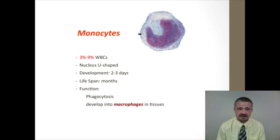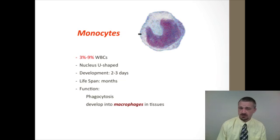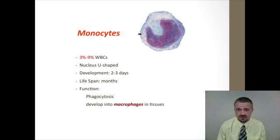The last white blood cell is the monocyte — generally the largest and third most common, making up about 5 to 10% of white blood cells. It has a U-shaped nucleus. Similar to neutrophils, it is a macrophage and will phagocytize different things, but unlike the picky neutrophil which only targets bacteria, the monocyte will engulf debris, bacteria, and other foreign bodies.